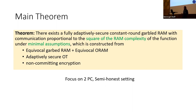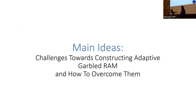The tools we need are adaptively secure oblivious transfer and adaptively secure channels realized using non-committing encryption. The focus for the rest of the talk is two-party computation in the semi-honest setting; we have a result in the malicious setting as well, but refer to the paper for details.